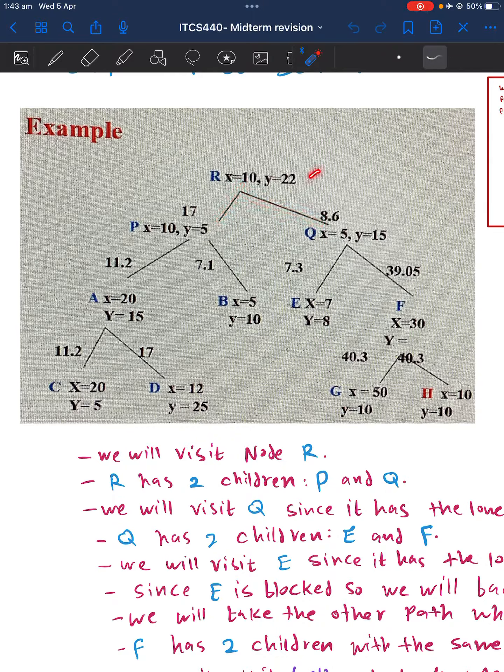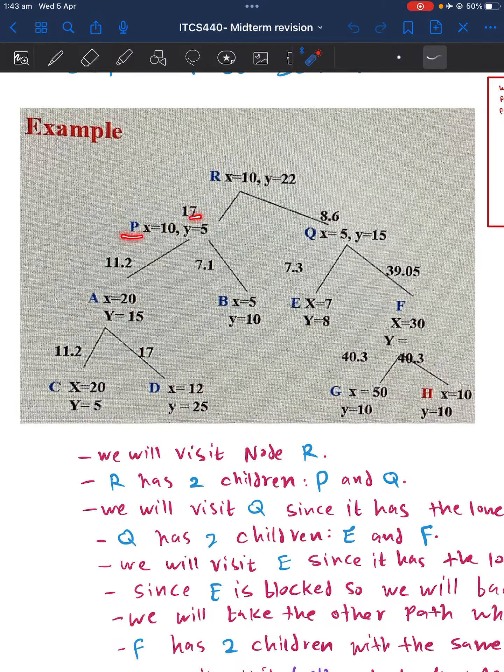So let's say for example we have this here. Let's say H is our goal. We will start in the root which is R. R has two children. Is R the goal?